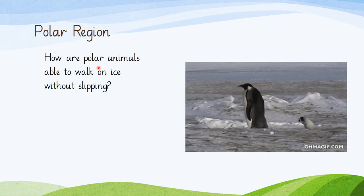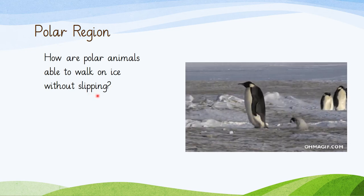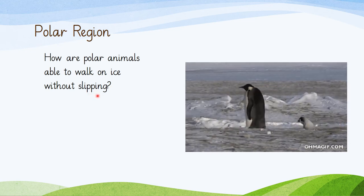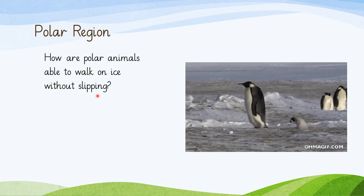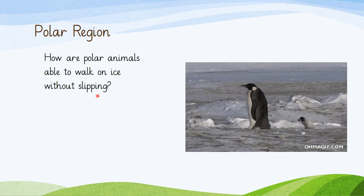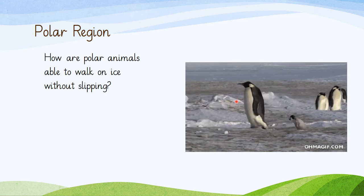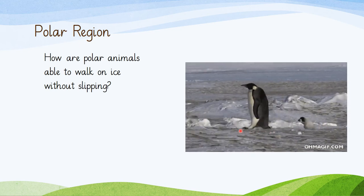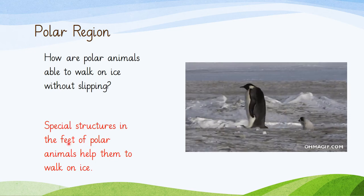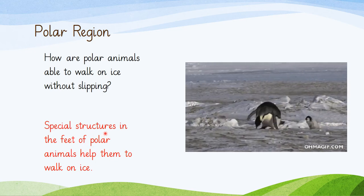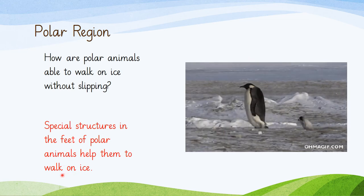How are polar animals able to walk on ice without slipping? When you attempt to walk on ice, you may slip. Even on a wet surface we can slip. How do polar animals survive without slipping? Their feet have special structures, and those structures help them to walk on ice.